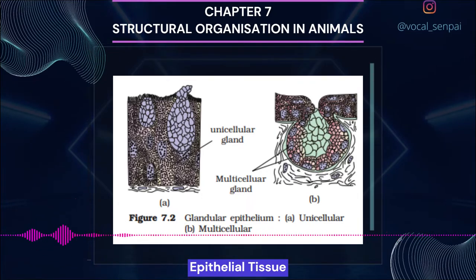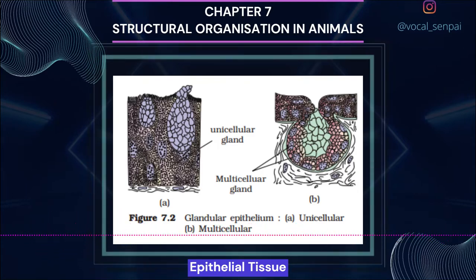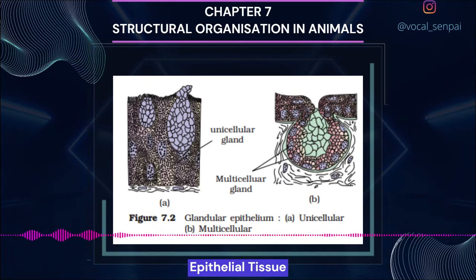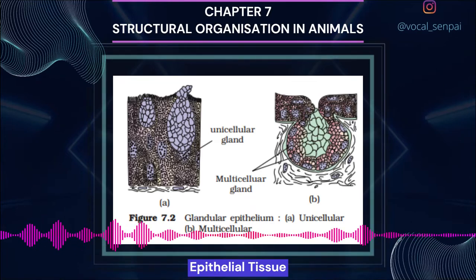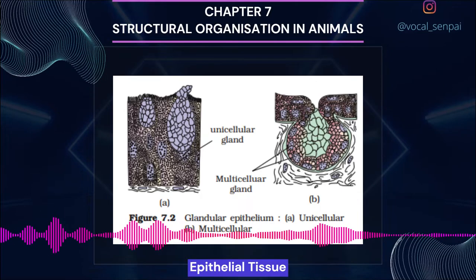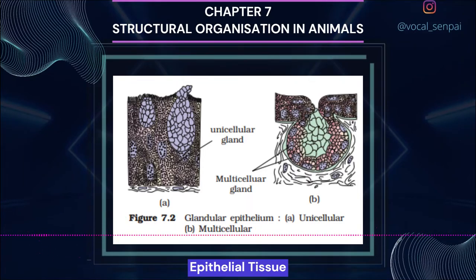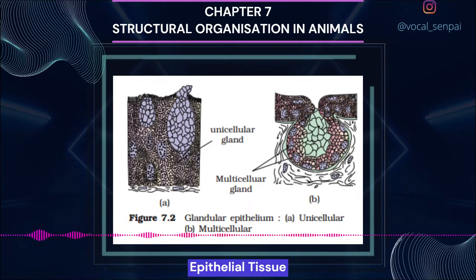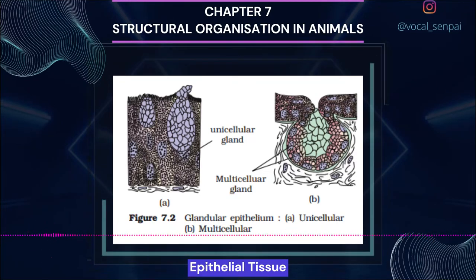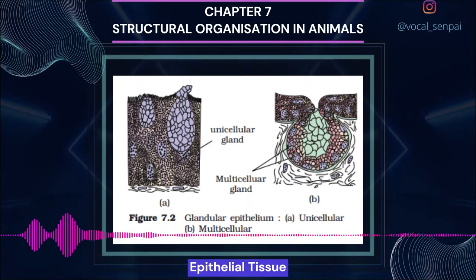Ciliated epithelium is mainly present in the inner surface of hollow organs like bronchioles and fallopian tubes. Some columnar or cuboidal cells get specialized for secretion and are called glandular epithelium (figure 7.2). They are of two types: unicellular, consisting of isolated glandular cells such as goblet cells of the alimentary canal, and multicellular, consisting of a cluster of cells such as salivary glands. On the basis of mode of secretion, glands are divided into exocrine and endocrine glands.